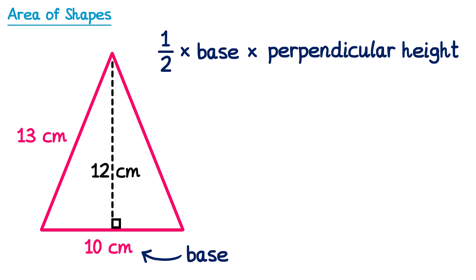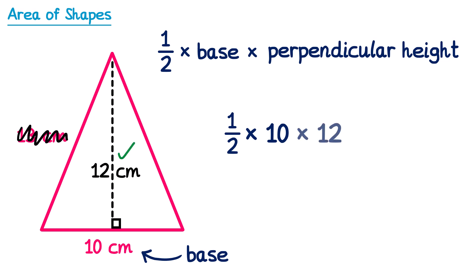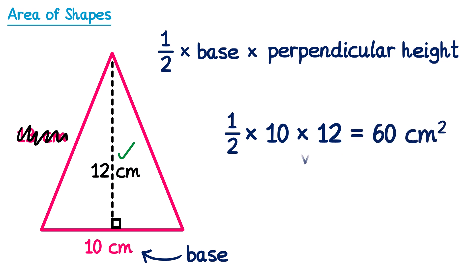Now let's use this formula to find the area of this triangle. So we'll do one half multiplied by the base, which we knew was 10, multiplied by the perpendicular height. We can see that 12 is the perpendicular height because it makes a right angle with the base, so we'll use the 12 and not the 13. We could do half of 10 first, which is 5, and then multiply this by 12, which will give you 60. Or we could do 10 multiplied by 12, which is 120, and then do half of this, which gives you 60 again.